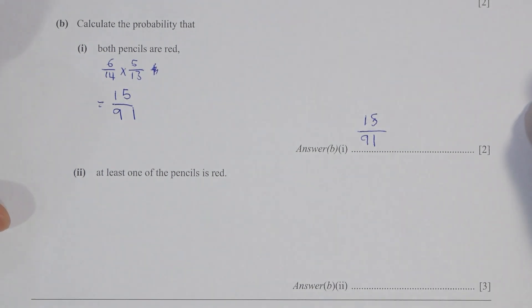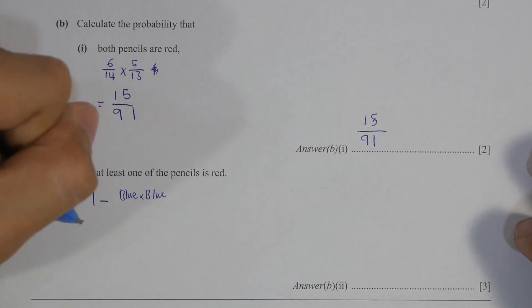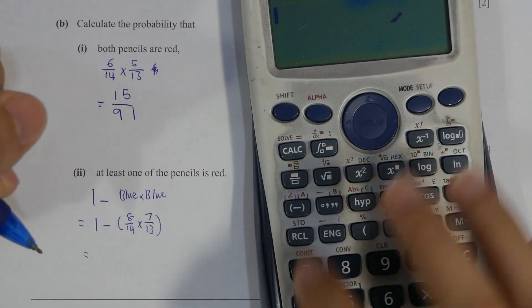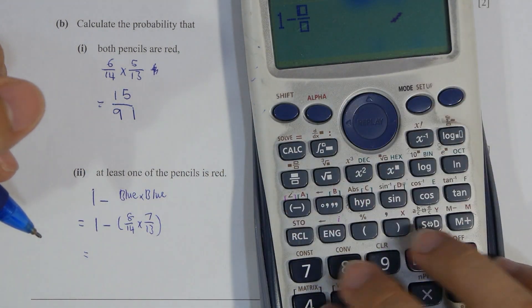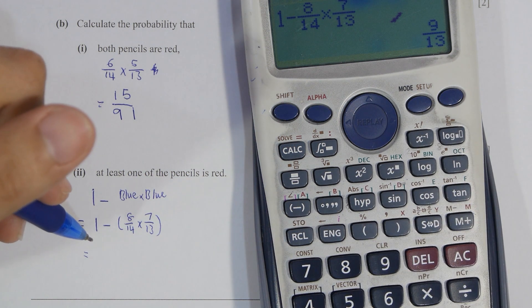But for part 2, pretty straightforward. Simply take 1, which is total probability, minus blue pencil for twice of its occurrence. So 1 minus 8 over 14 times 7 over 13, and the answer will be 9 over 13.